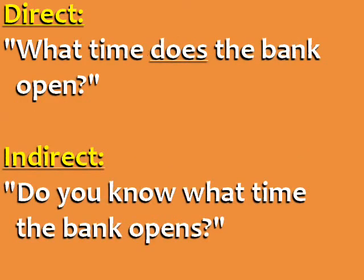Direct: 'What time does the bank open?' Indirect: 'Do you know what time the bank opens?' In indirect questions, we don't use auxiliary verbs like do, does, or did. Also, in the indirect question, we say 'the bank opens.'